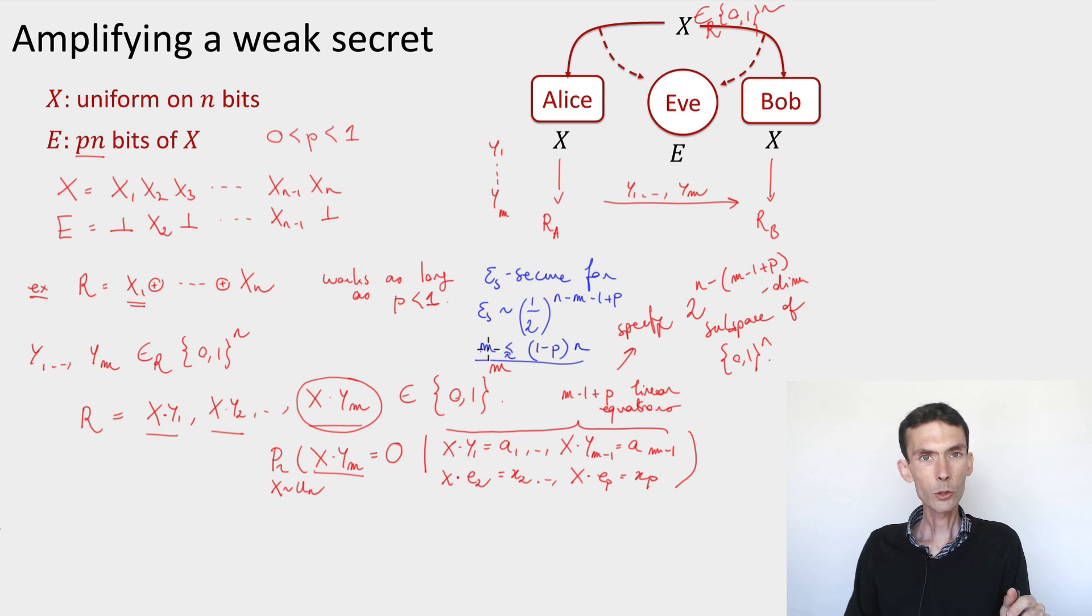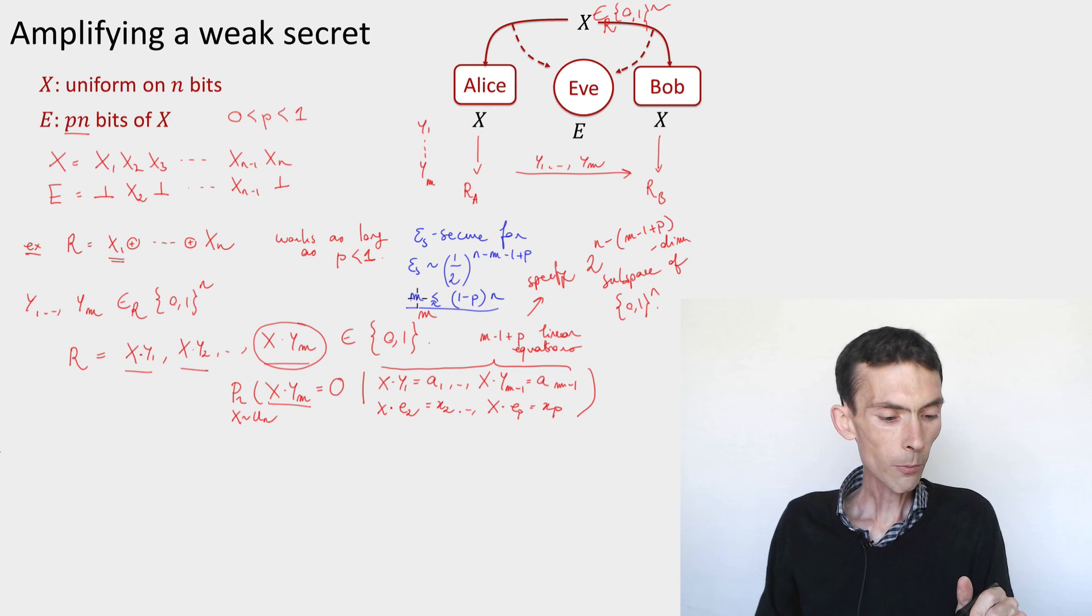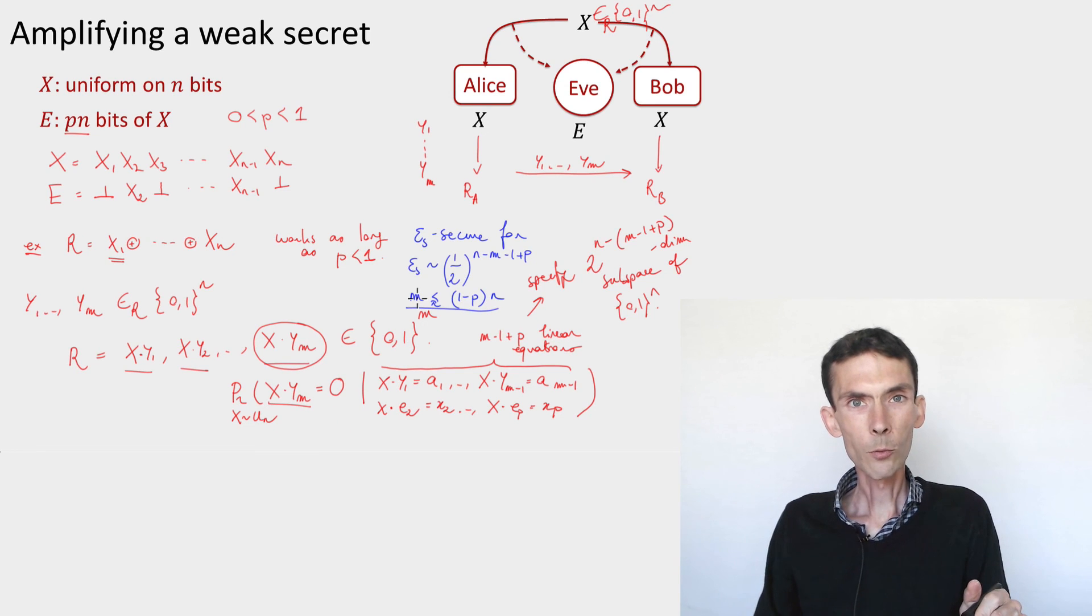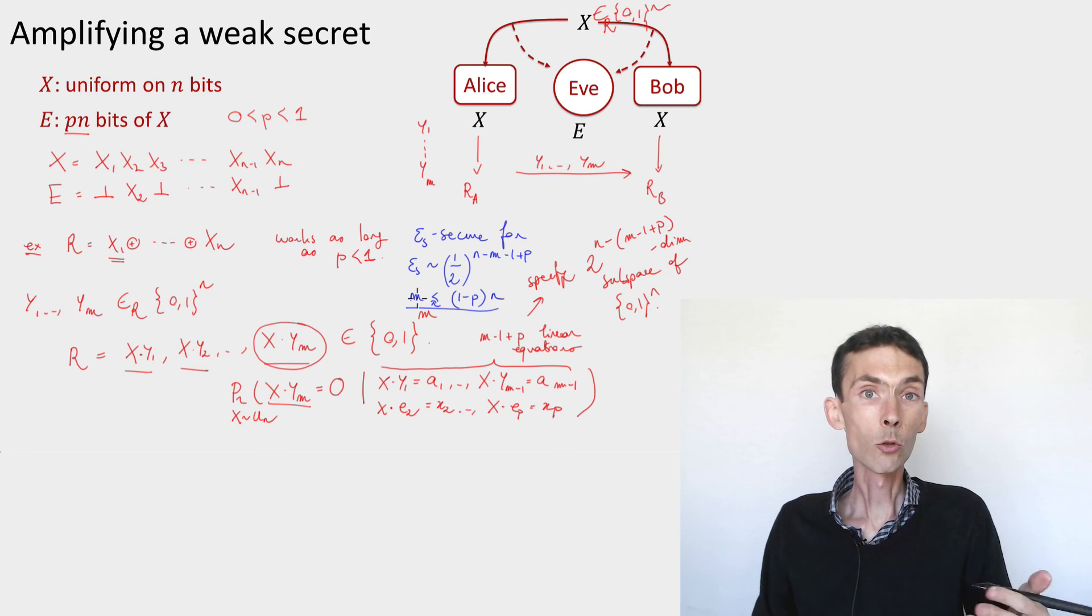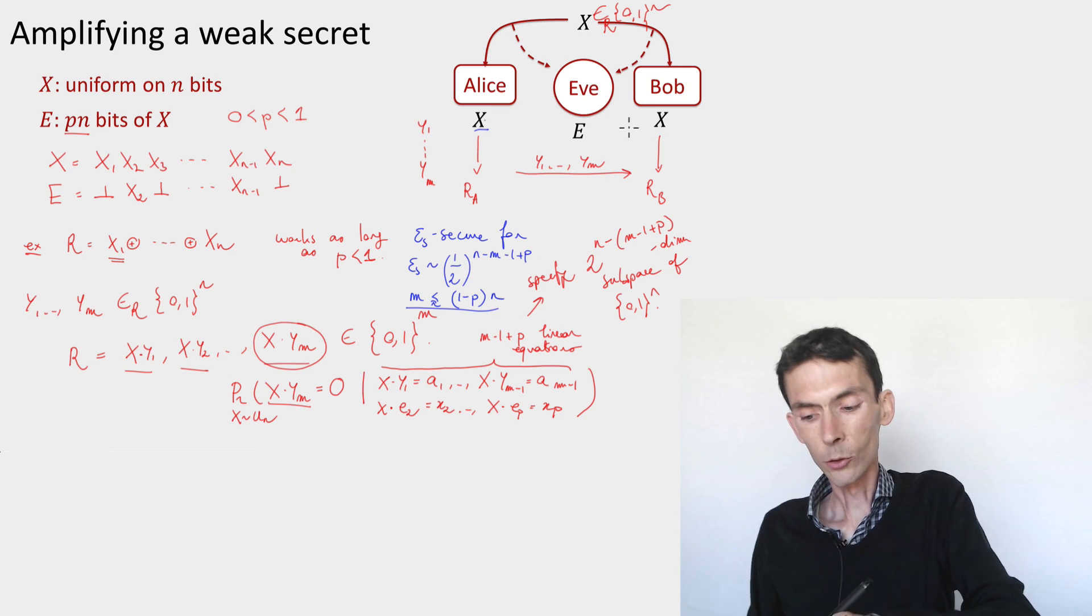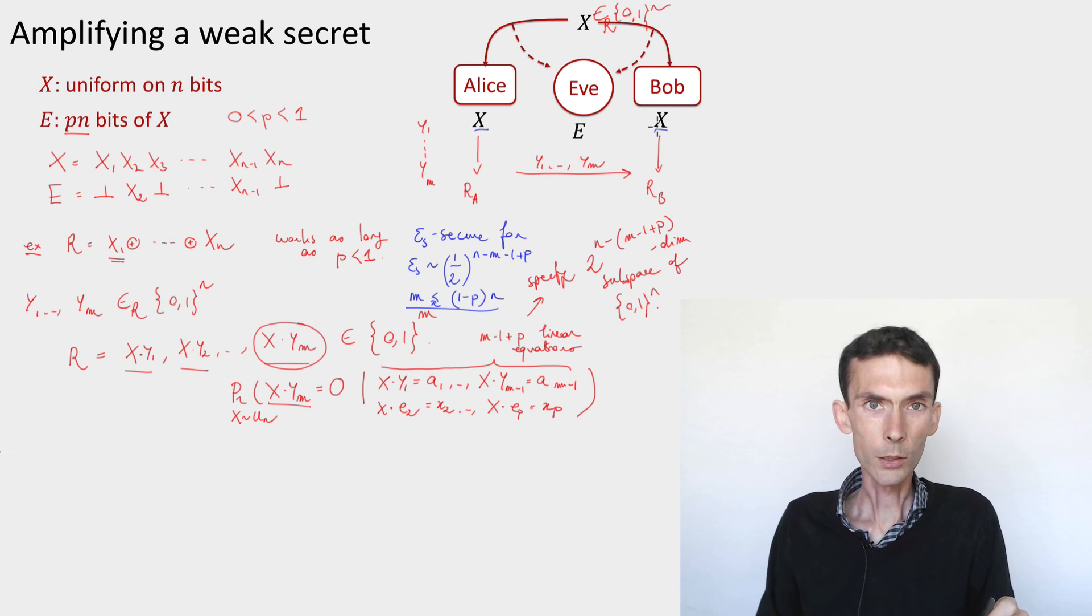So here I gave you a heuristic argument why this bound should hold, why the procedure should be secure as long as m is roughly less than (1-p)n. In the problem set you'll work this out into a little bit more detail. That's our first example of a concrete privacy amplification procedure that is able to extract as many bits as is possible from the weak secret x depending on how much side information the eavesdropper has. Of course here we made the assumption that the eavesdropper side information was a little bit specific, and so what we're going to do in the coming modules is describe the procedures that let us achieve the same task but under no restriction on the eavesdropper side information aside from the fact that it's not too large, in the sense that there is some entropy left in the weak secret x that Alice and Bob shared conditioned on the side information.